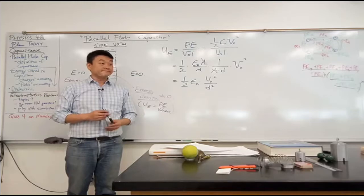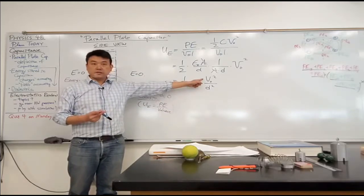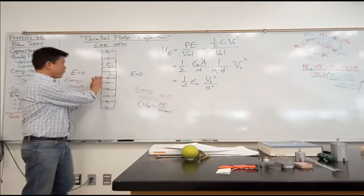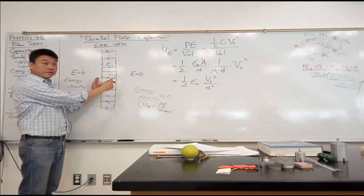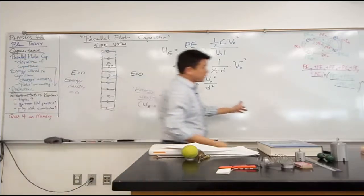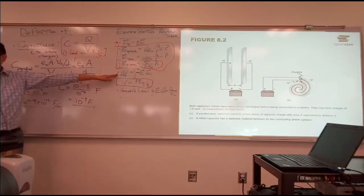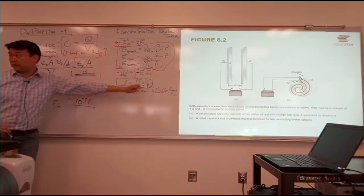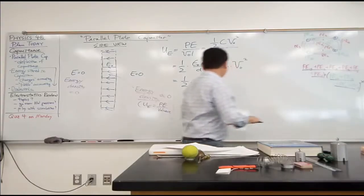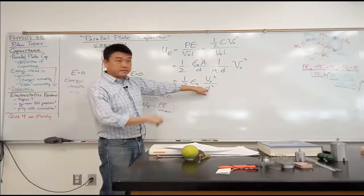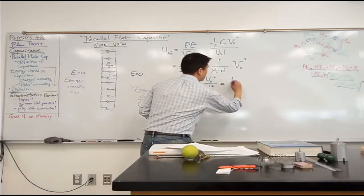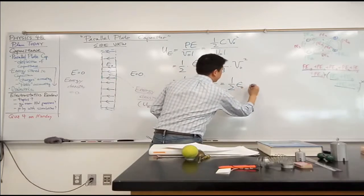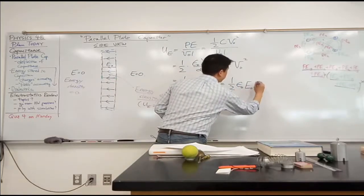So, voltage divided by the distance over which you measure the voltage difference. Electric field, right? So, looking at this definition here, that's how voltage and electric field are related. So, I can say V naught over D is the E, electric field. So, this expression turns into one-half epsilon naught electric field squared.